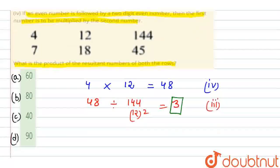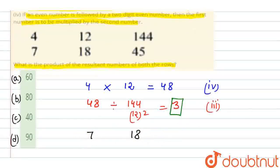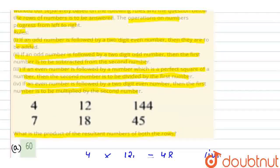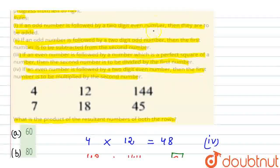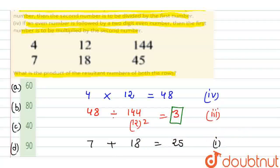Now we'll solve the second row. Given is seven and eighteen. Seven and eighteen. Seven is an odd number, eighteen is an even number. That means rule one applies. An odd number is followed by two-digit even number, then they are to be added. That means we add them. Seven plus eighteen is equal to twenty-five, according to rule first.